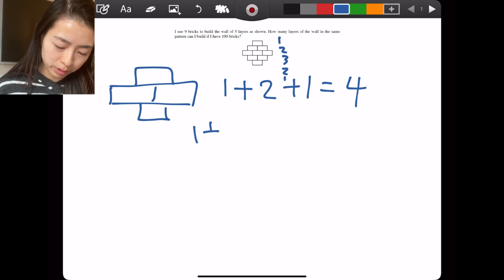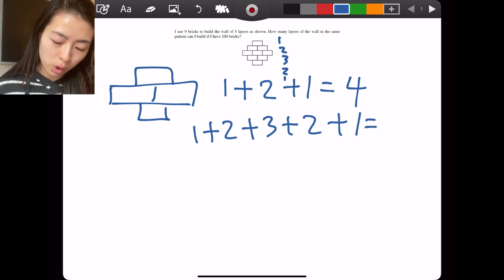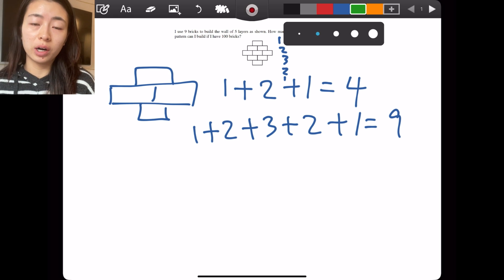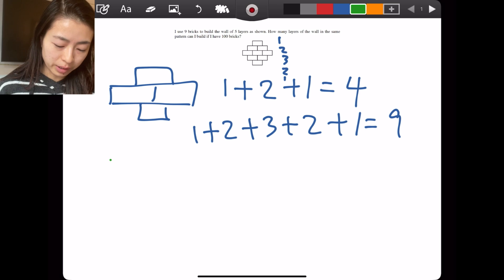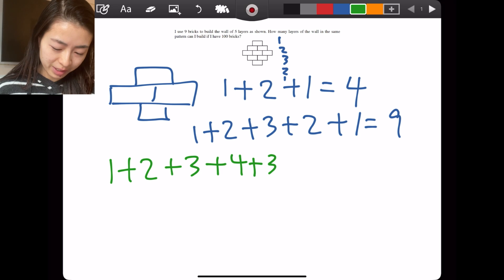With five layers we have one, two, three, two, and one, so 1 + 2 + 3 + 2 + 1 bricks which equals nine. Similarly, without having to draw it out, we know that the bricks where there are seven layers will be 1 + 2 + 3 + 4 + 3 + 2 + 1 and that adds up to 16.